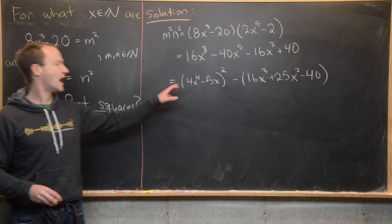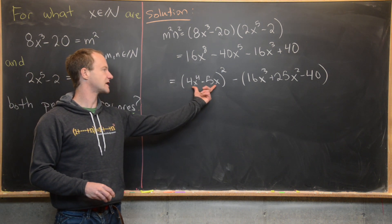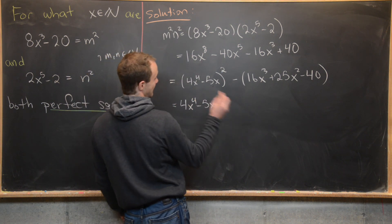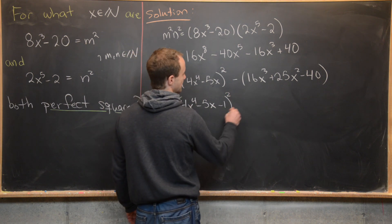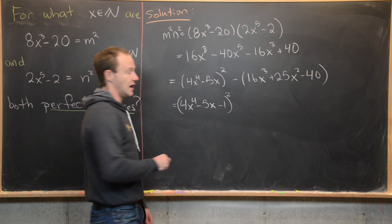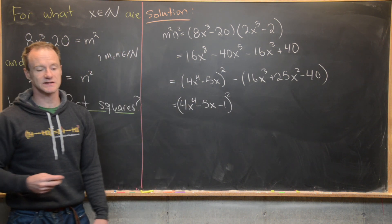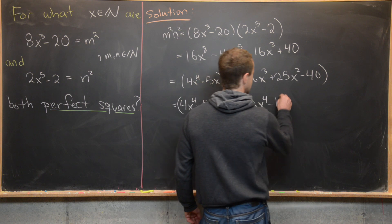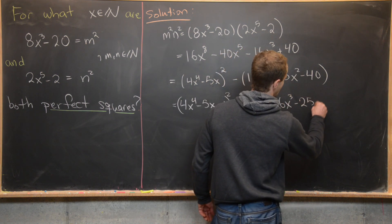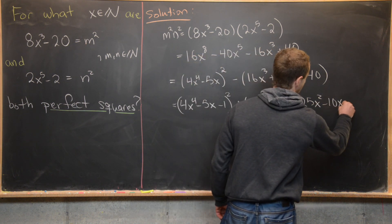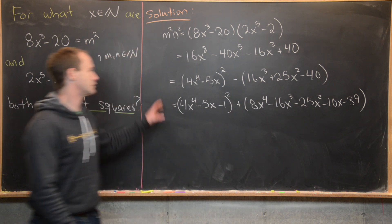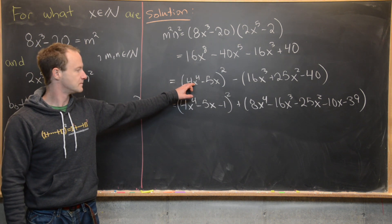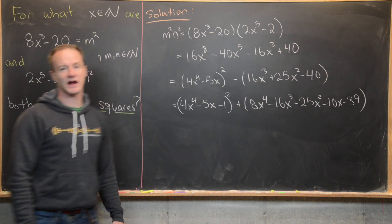We can also express m²n² as the next lower perfect square: (4x⁴ − 5x − 1)² plus a correction. Working that out gives m²n² = (4x⁴ − 5x − 1)² minus 16x³ minus 25x² minus 10x minus 39. Call that correction term g(x). So we have m²n² expressed between two consecutive perfect squares with correction factors f(x) and g(x).